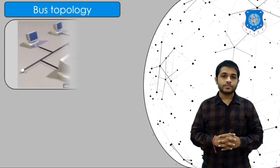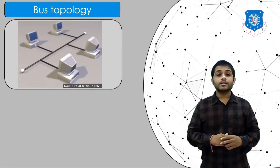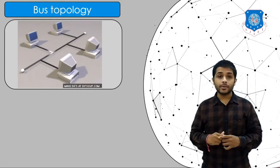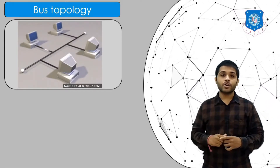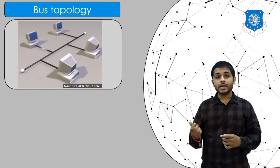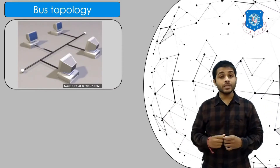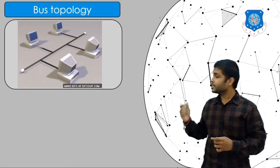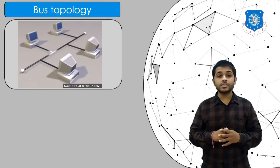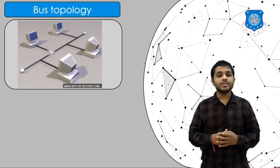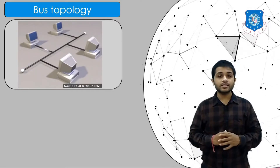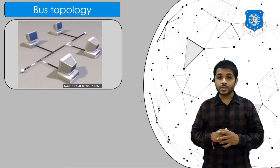This is an example of bus topology. You can see these four computers are connected via a cable, and this cable is called the backbone cable. In bus topology, n number of devices can be connected to a single cable. You can see in this figure one computer is sharing resources, but instead of only one device receiving, all the remaining devices are receiving the data.